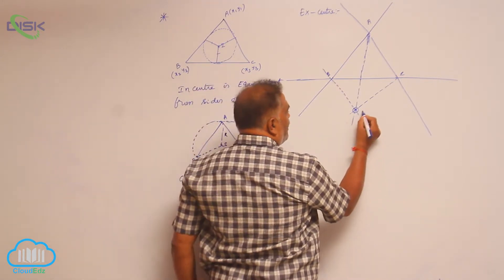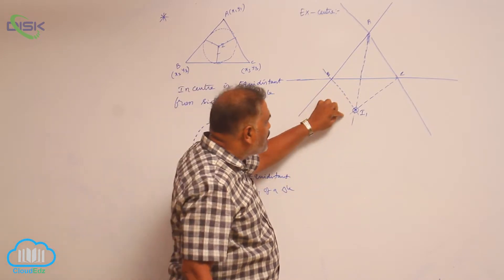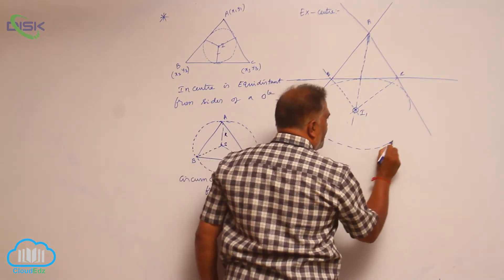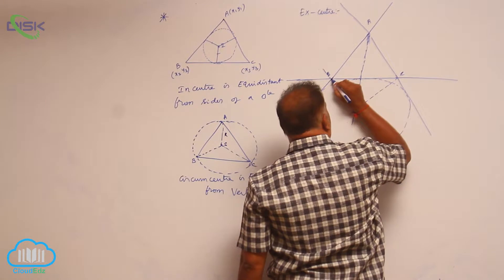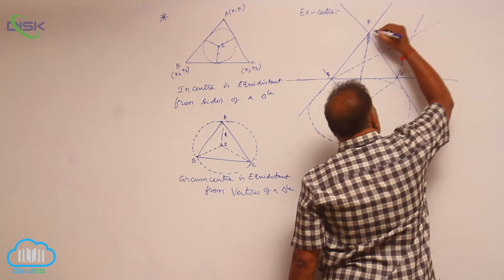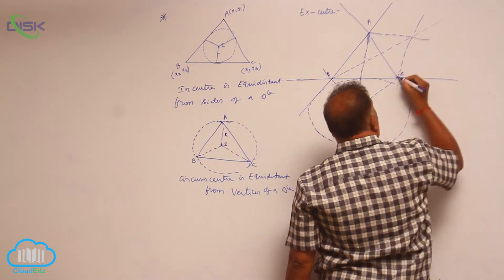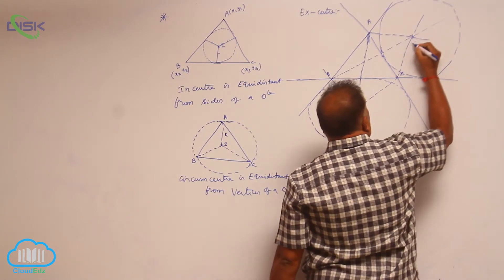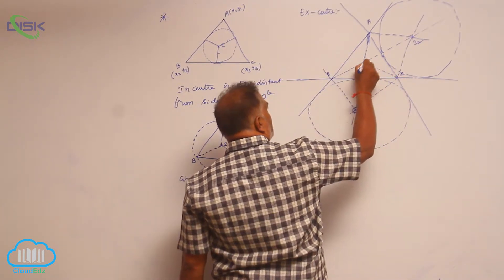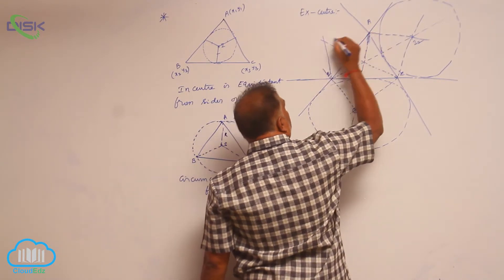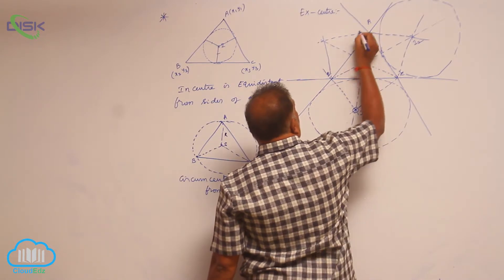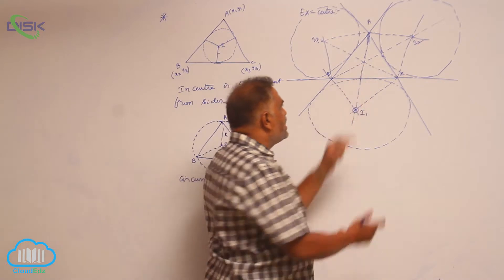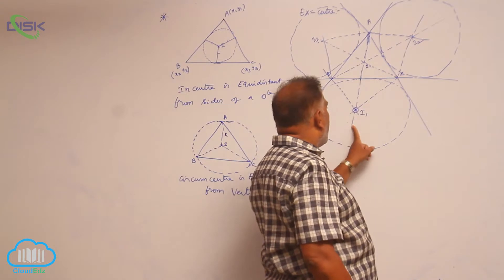This point is called the excenter, denoted by I1 — the excenter opposite to vertex A. The circle will be approximately like this. In the same fashion, for vertex B you draw the internal angular bisector for B and external bisectors for A and C, giving circle I2. Similarly through vertex C another circle I3 is possible. So we have the incenter I, and excenters I1, I2, I3.